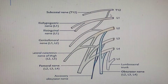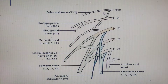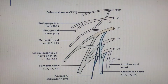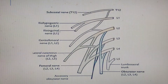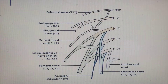The first nerve coming from the anterior division of the ventral rami of L1 is the iliohypogastric nerve. You can see this nerve from L1 here. Below that, also from the L1 ventral rami, anterior division, I have the ilioinguinal nerve. So from the L1 anterior division we see two nerves: the iliohypogastric nerve and the ilioinguinal nerve.